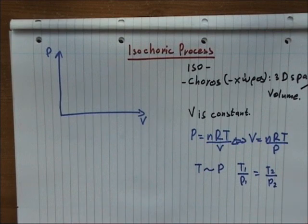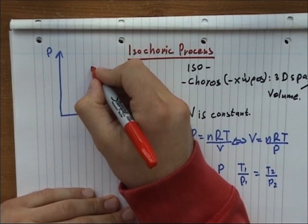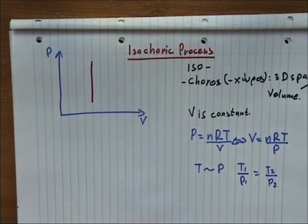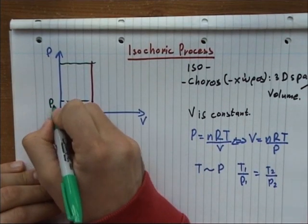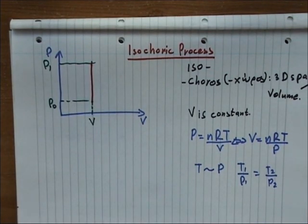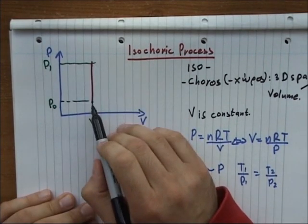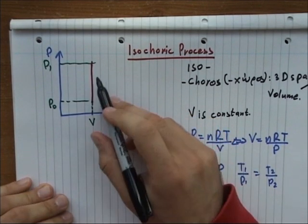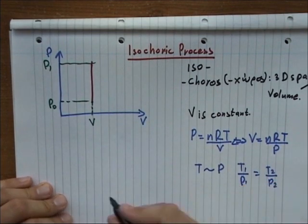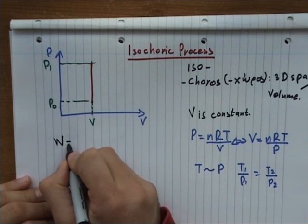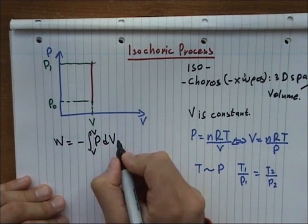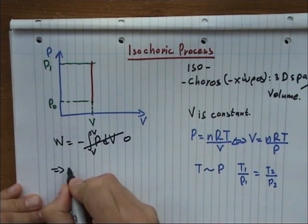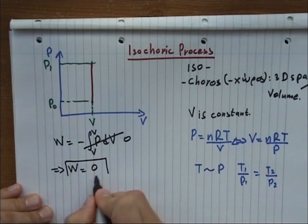Now this process on a PV diagram has this form: a vertical line at constant volume, with P0 and P1. We see that there is no space under the curve to calculate the work being done, which can be confirmed from the integral, minus integral P dV, which is from V to V. This is zero, so the work being done by the gas is zero.